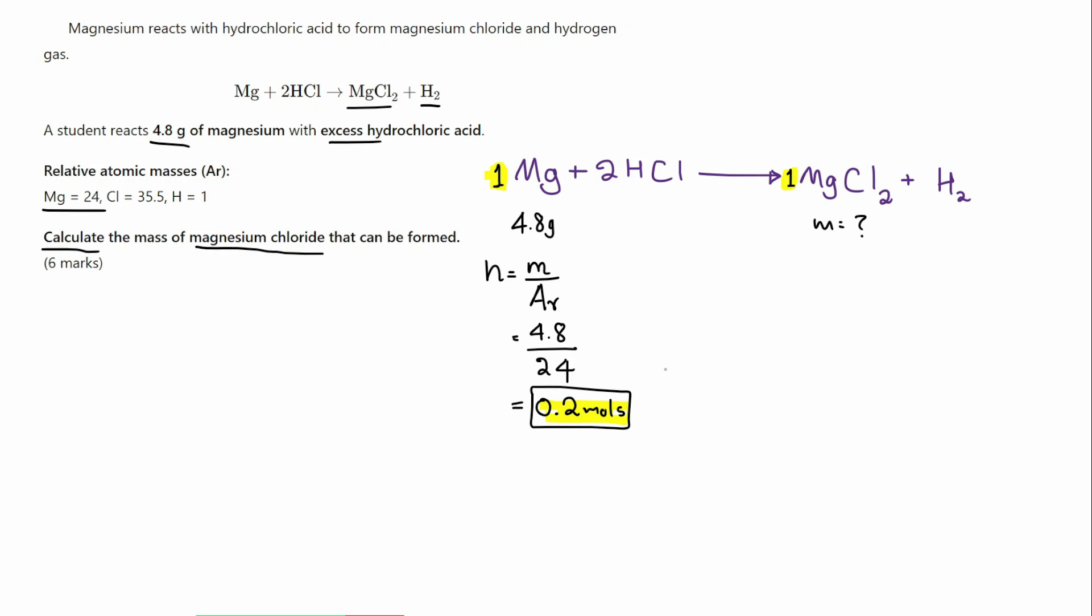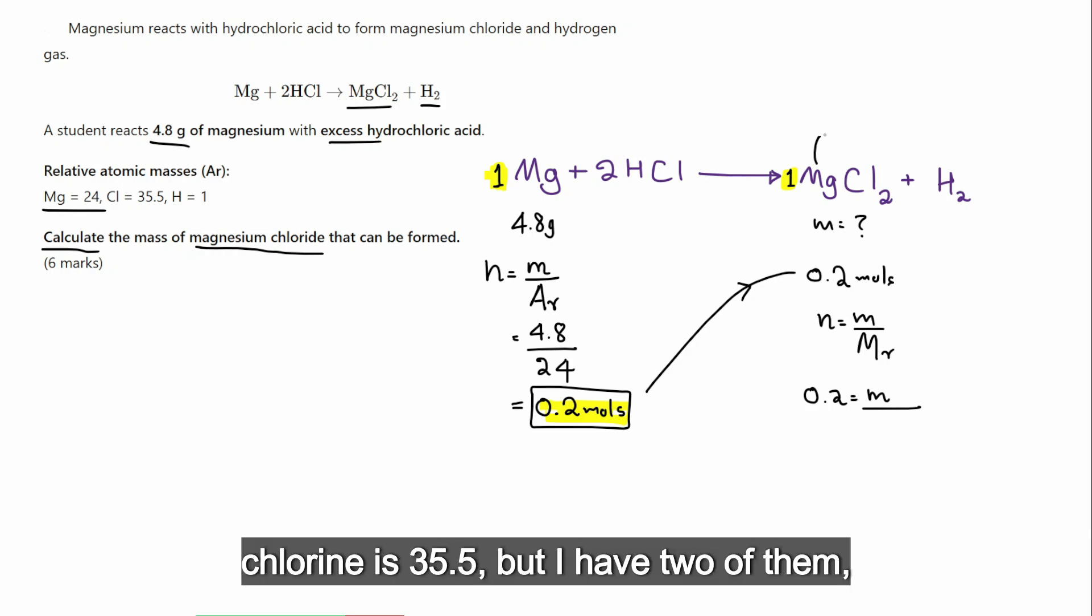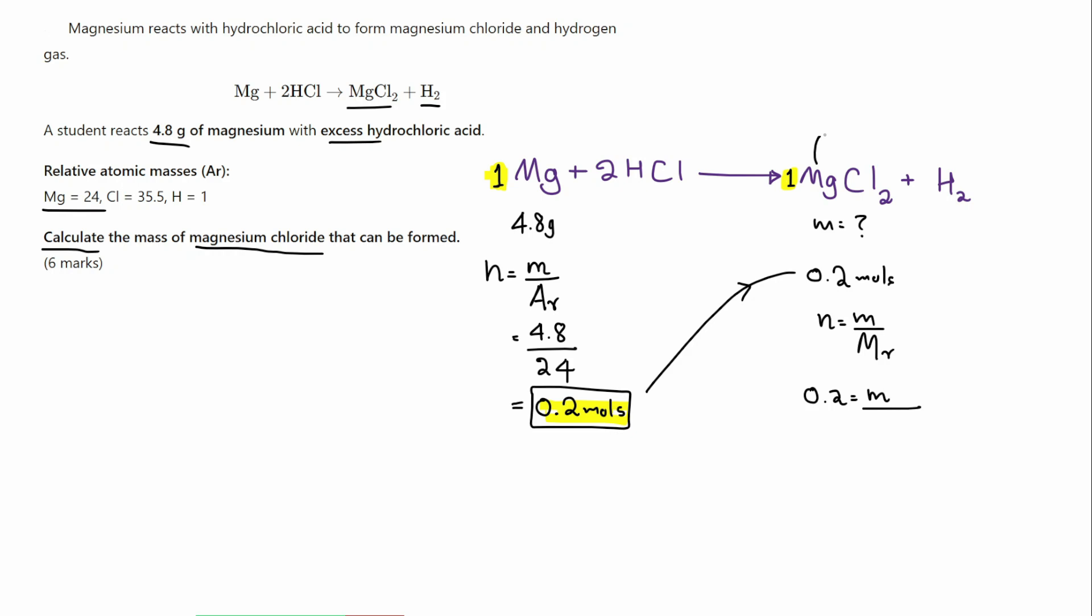Magnesium is 24 plus Cl₂. Chlorine is 35.5, but I have two of them. Okay. So, 35.5 times by 2. So, the sum here is 71 add 24, which is 95.